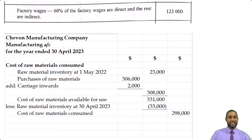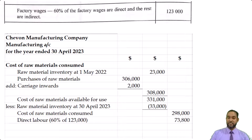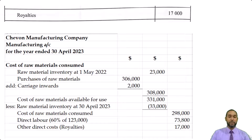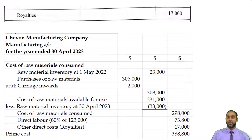Our factory wages: it says 60% of the factory wages are direct and the rest are indirect, with a total of $123,000. So we find 60% of $123,000, which gives us $73,800. And as mentioned before, the royalties of $17,000 are direct because without those, we would not have permission to use whatever intellectual property or designs we had to use to produce these goods. Adding those three items together gives us a prime cost of $388,800.